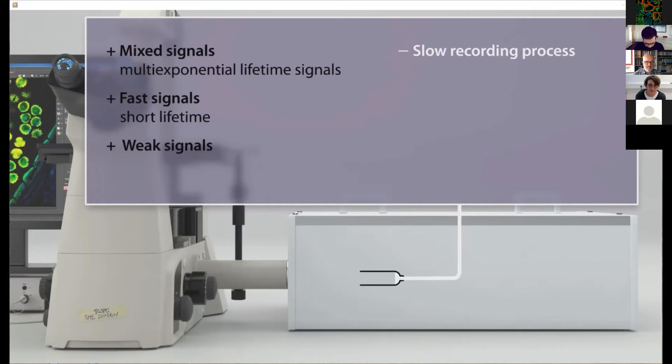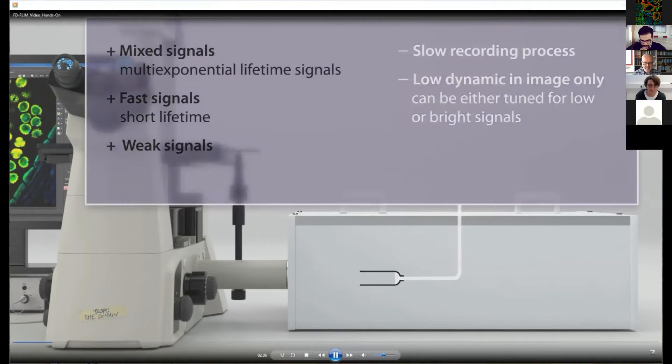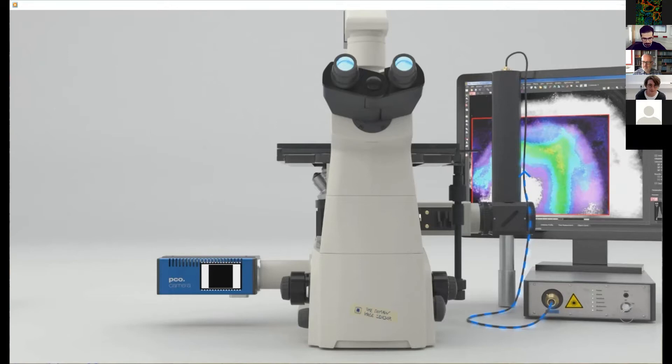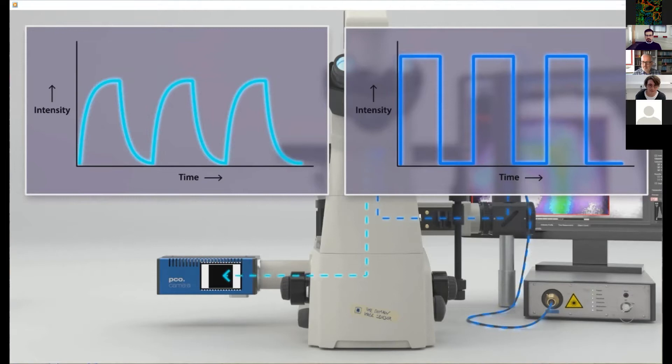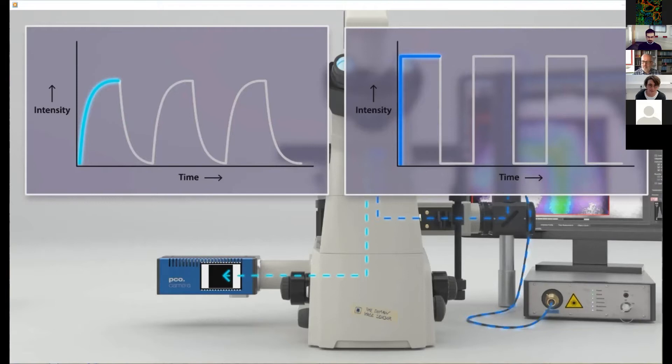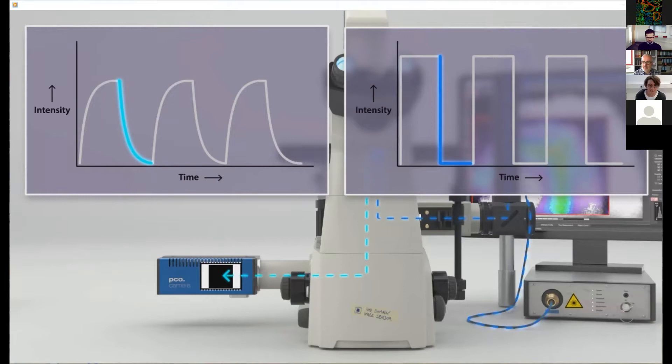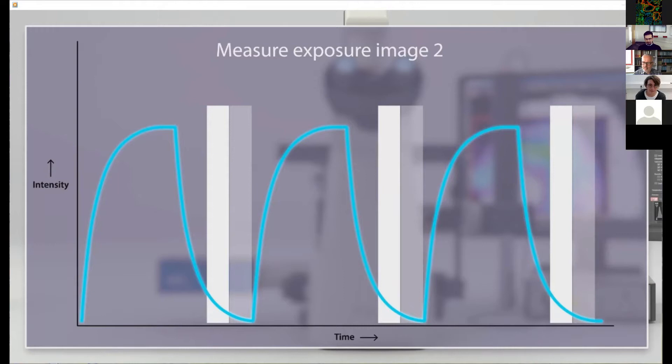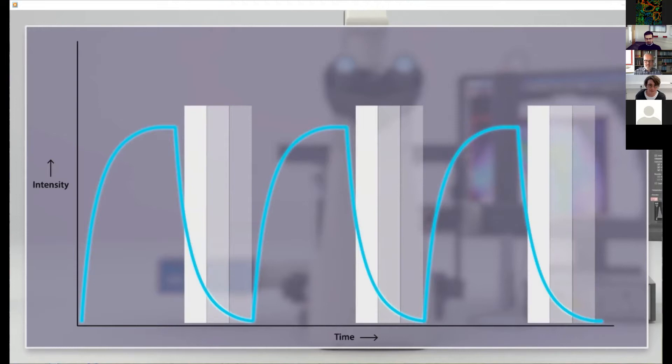On the downside, the recording speed of the process is slow due to its point scanning nature. One frame of a thousand times a thousand pixels can take up to several minutes. And because it depends on single photon counting, it has a limited dynamic range. To prevent under or over exposing, it has to be tuned for either dim or bright signals.